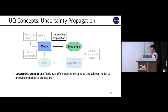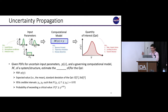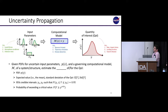We'll start with uncertainty propagation — usually the last step when making a probabilistic prediction, but often considered the main concept of UQ. A lot of times people look at uncertainty propagation as synonymous with UQ. It's a class of methods that allows you to feed quantified input uncertainties through your model to produce probabilistic predictions of some quantity of interest. We assume input parameter PDFs are known, and the question is: how do we estimate the uncertainty in our quantity of interest?